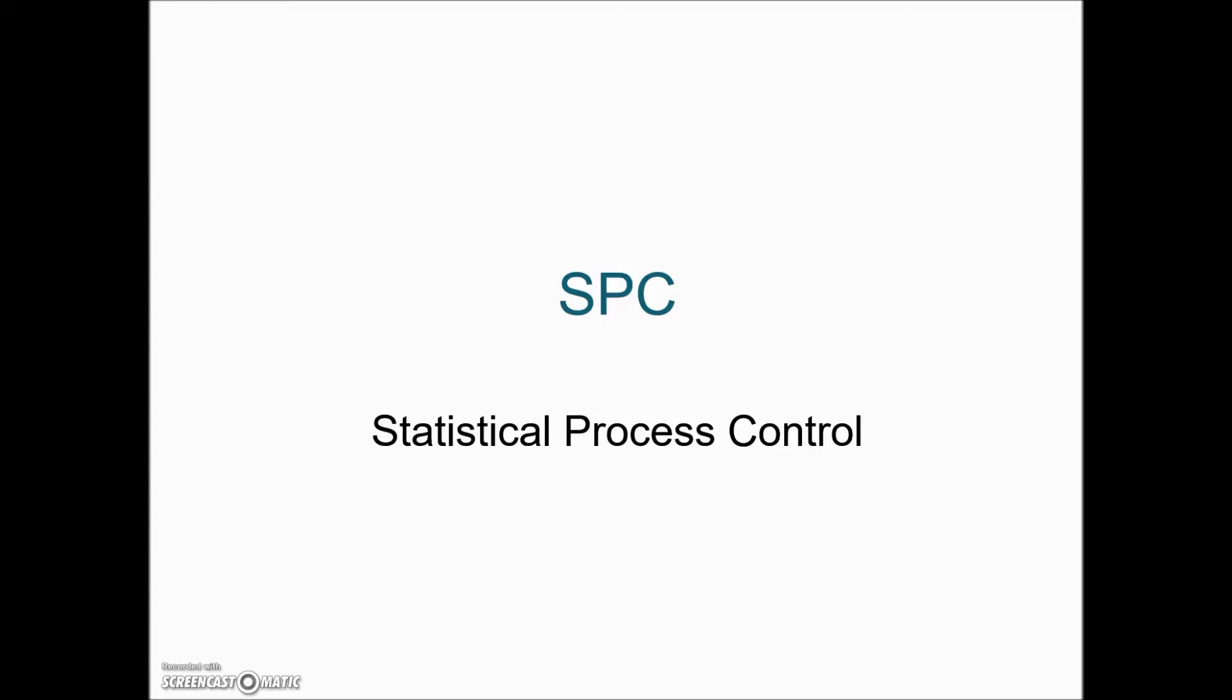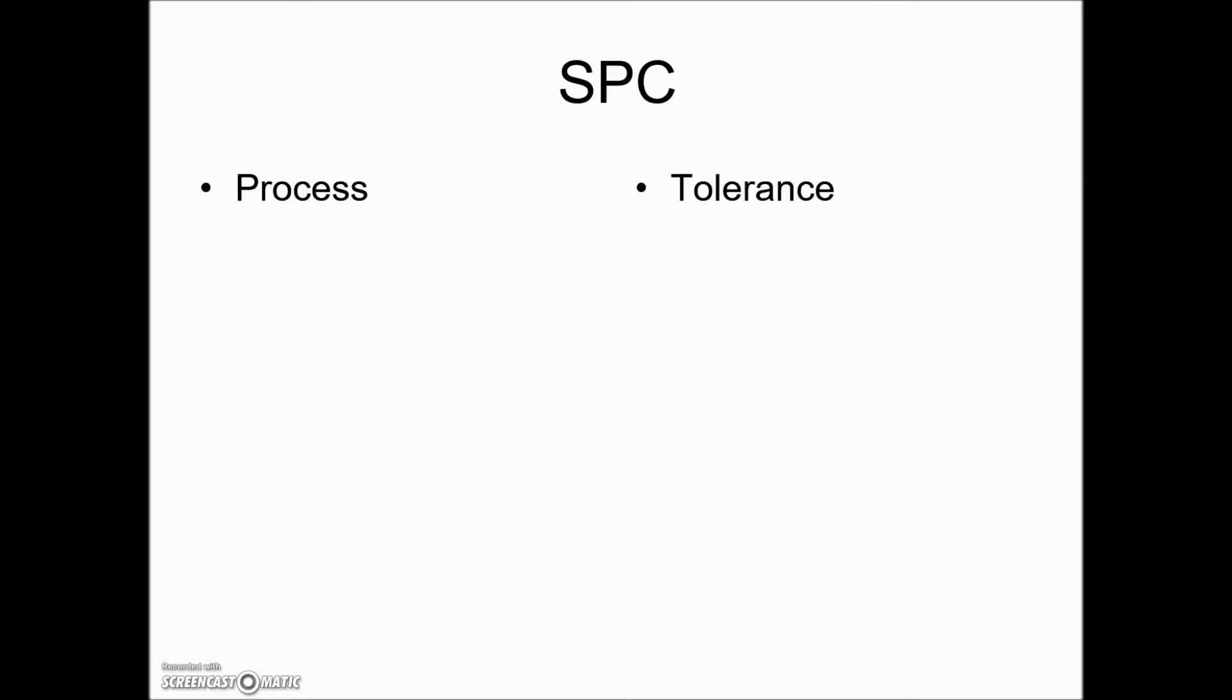Statistics unit section 4. In today's competitive marketplace, businesses and industries know they must provide quality products and services. As part of a bigger quality initiative, businesses often use statistical process control or SPC. This is a method used to measure, understand, and control variation that occurs in a manufacturing process.